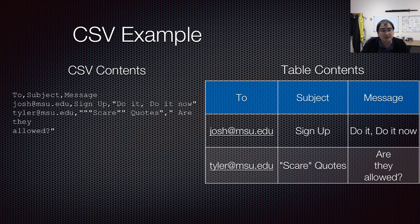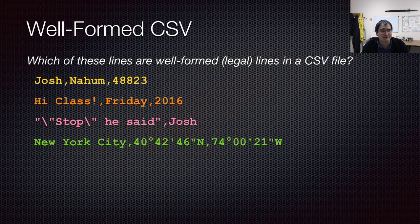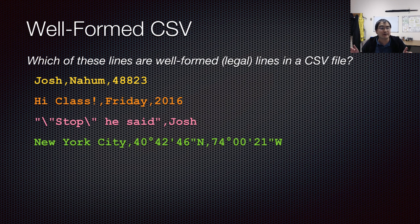Let's go to a multiple choice question. For these four records, which of these are well-formed lines in a CSV file? 'Josh, Nahum, 48823' — sure, those are three fields separated by commas. 'Hi class!, Friday, 2016' — sure, exclamation points are perfectly fine in fields, they don't need to be escaped.